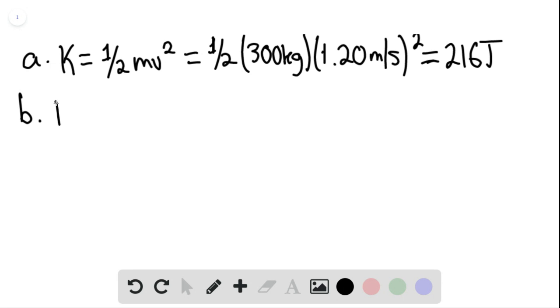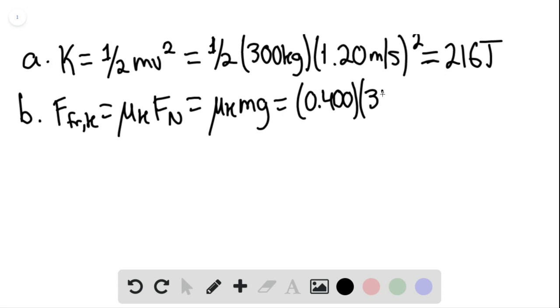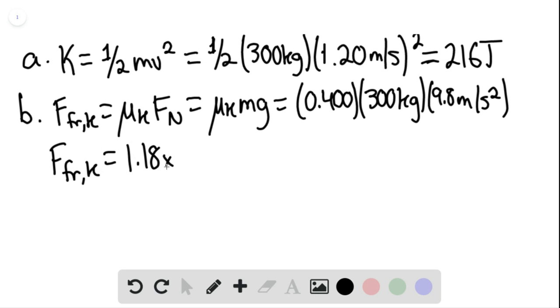For part B, the magnitude of the kinetic frictional force would be equal to the coefficient of kinetic friction times the normal force. In this case, this is the coefficient of kinetic friction times mg, equaling 0.400 times 300 kilograms multiplied by 9.8 meters per second squared. The kinetic frictional force would then be equal to 1.18 times 10 to the third newtons.